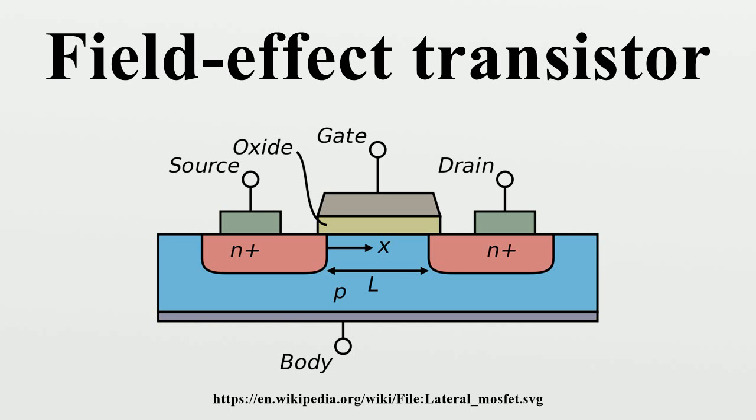In June 2011, IBM announced that it had successfully used graphene-based FETs in an integrated circuit. These transistors are capable of about 2.23 GHz cutoff frequency, much higher than standard silicon FETs.